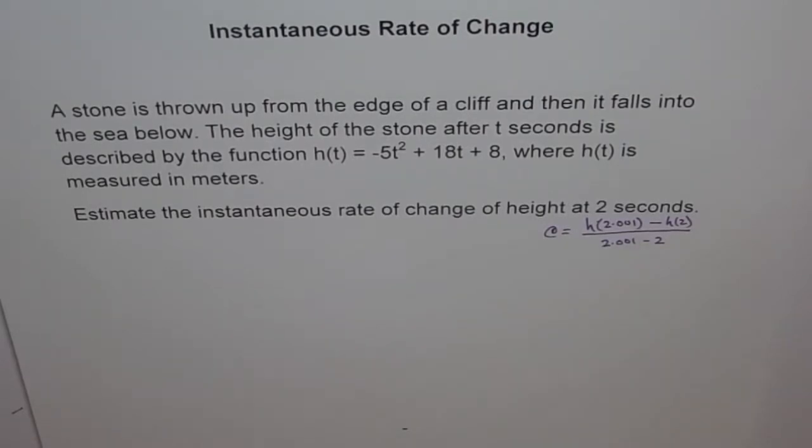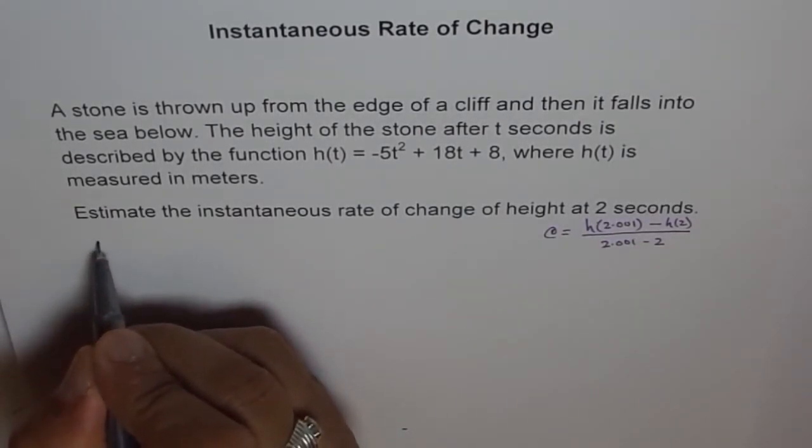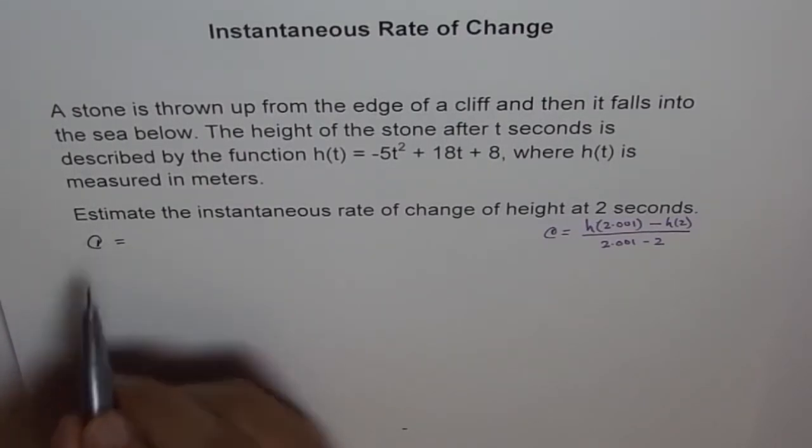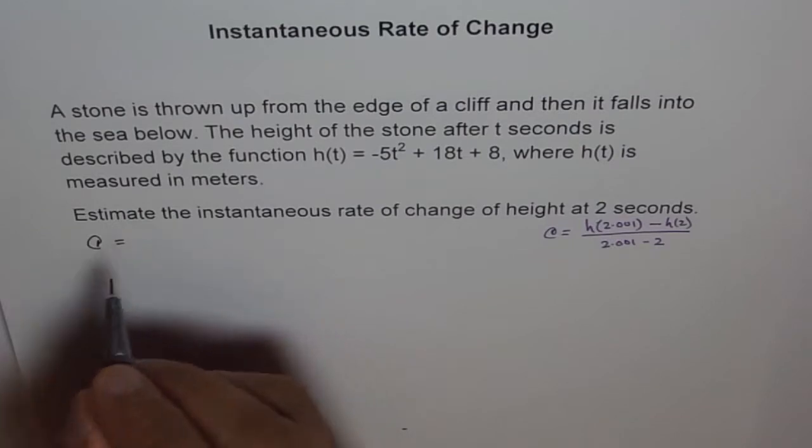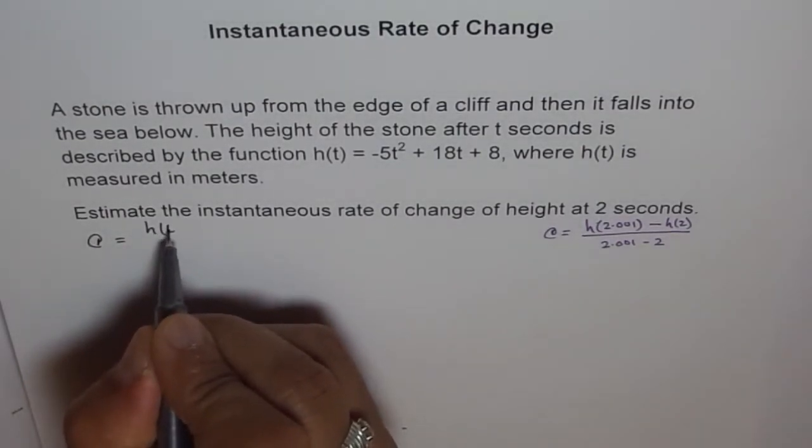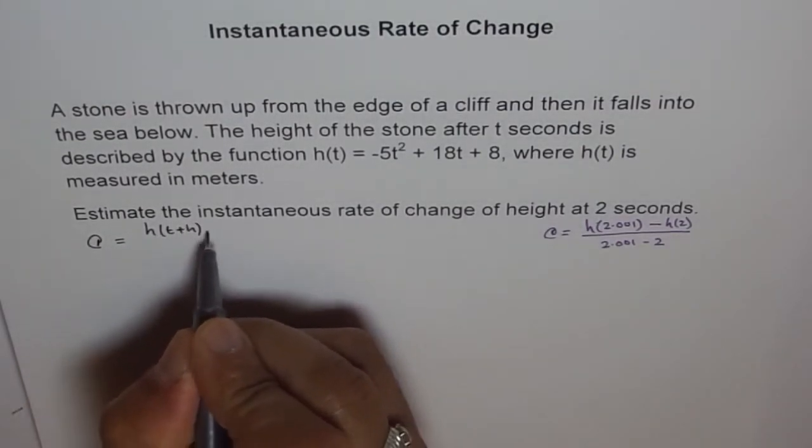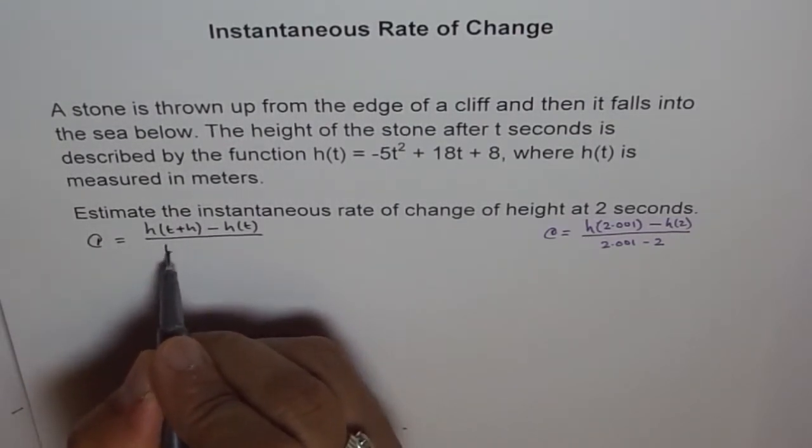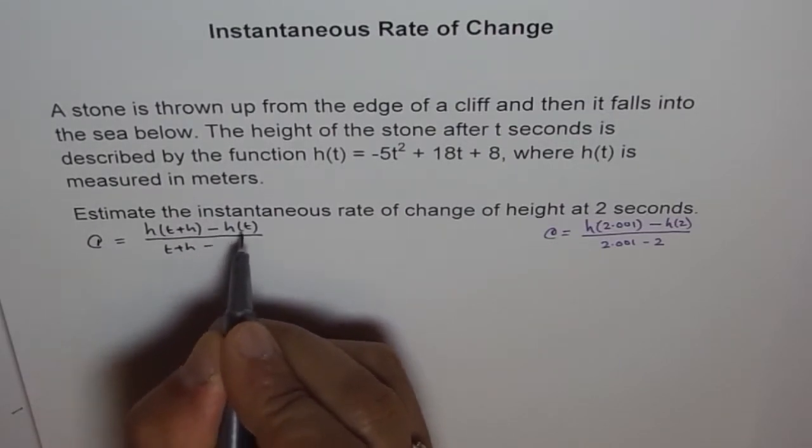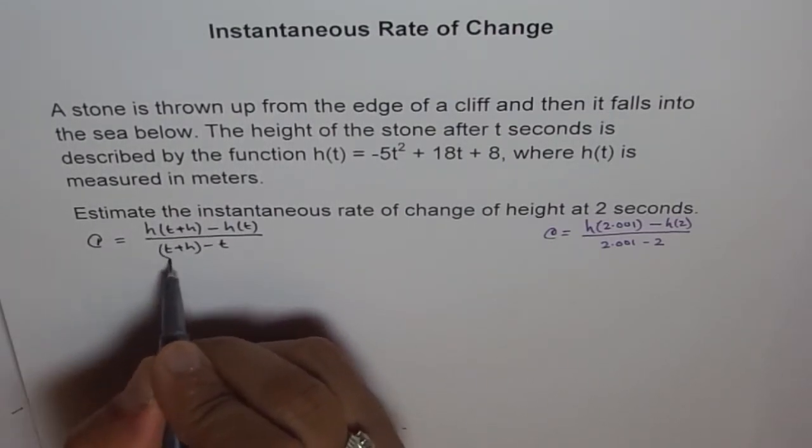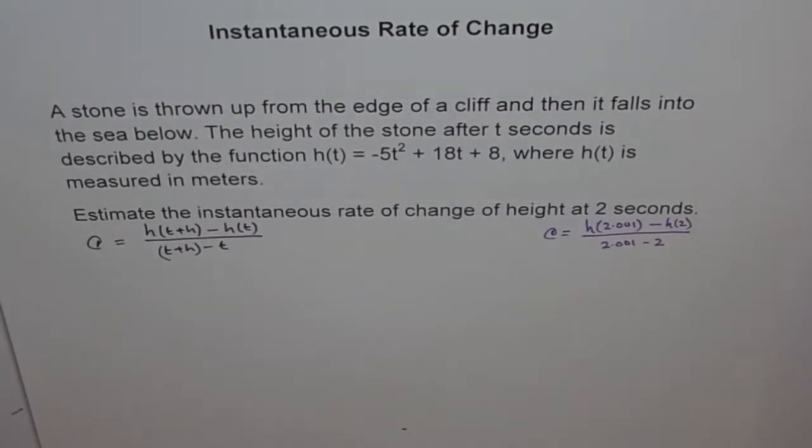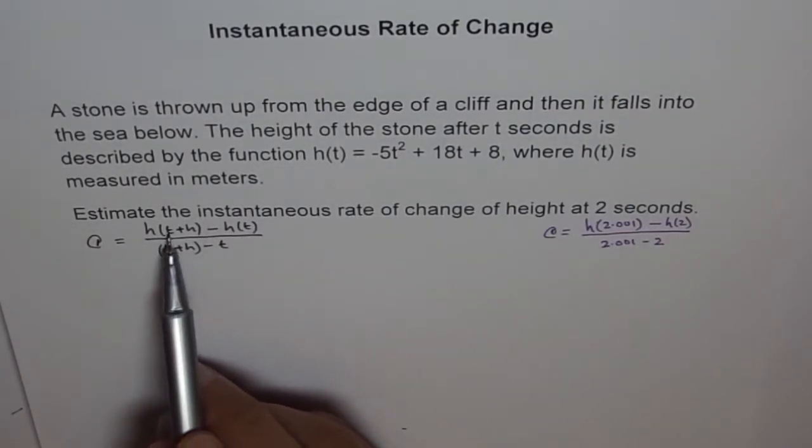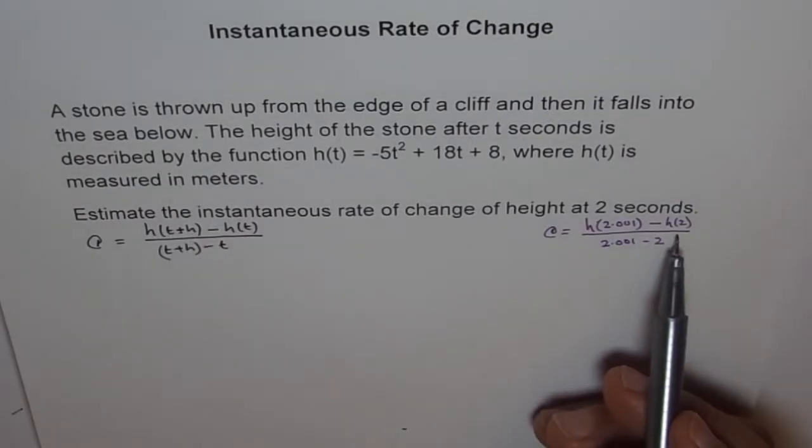Now, here, I am showing you the general method of doing it. So, what we do here is, we find instantaneous rate of change, and then, we say, h(t+h) - h(t) over t+h - t. So, that also gives me the slope of the secant, where the point is at t and the other point is at t+h. So, it is the same thing.